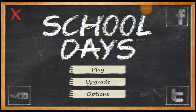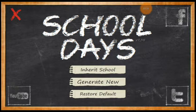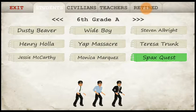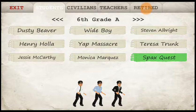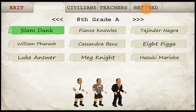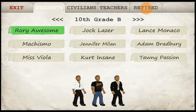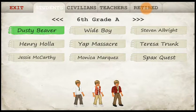So guys, you can pick between inherit school, general, new, or restore default. You can pick any grade you would like to be in — sixth grade A or B, seventh grade A or B, eighth grade A or B, ninth grade A or B, tenth grade A or B. And that's it, but we're gonna start...